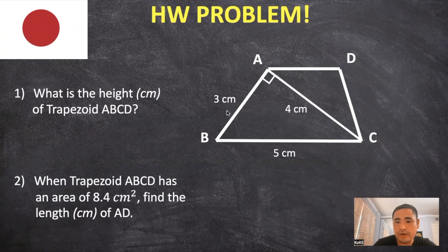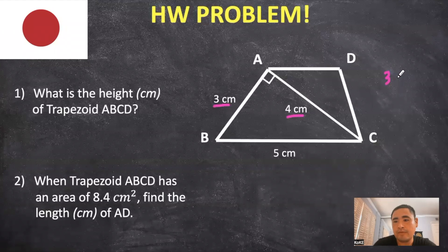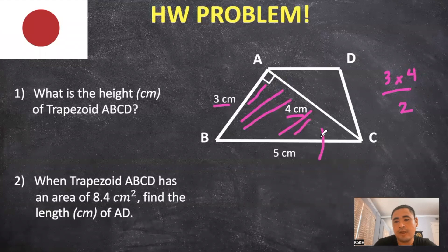So really quick, what we can do here is because we know the base and the height of triangle ABC, we can find the area of the triangle by doing three times four divided by two. So triangle ABC is going to have an area of six square centimeters.